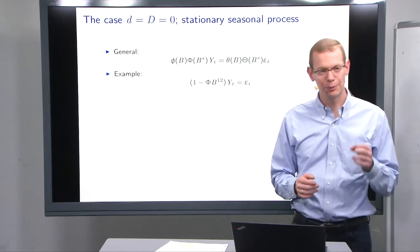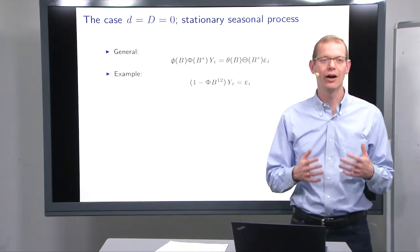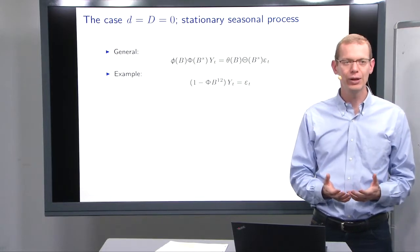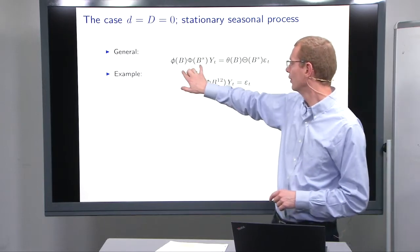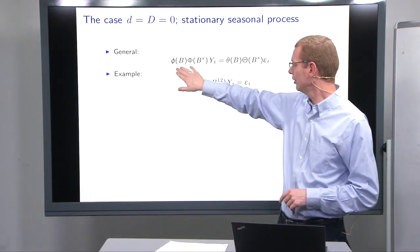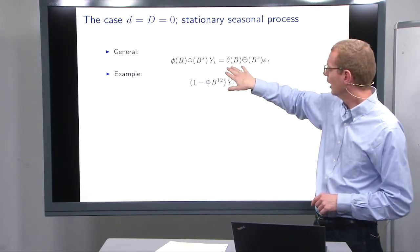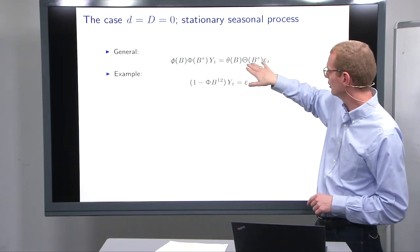So, in the case where both lowercase and uppercase d are zero, then we have a stationary process, stationary seasonal process. So, we have the AR non-seasonal and seasonal part again, and the moving average non-seasonal and seasonal part.